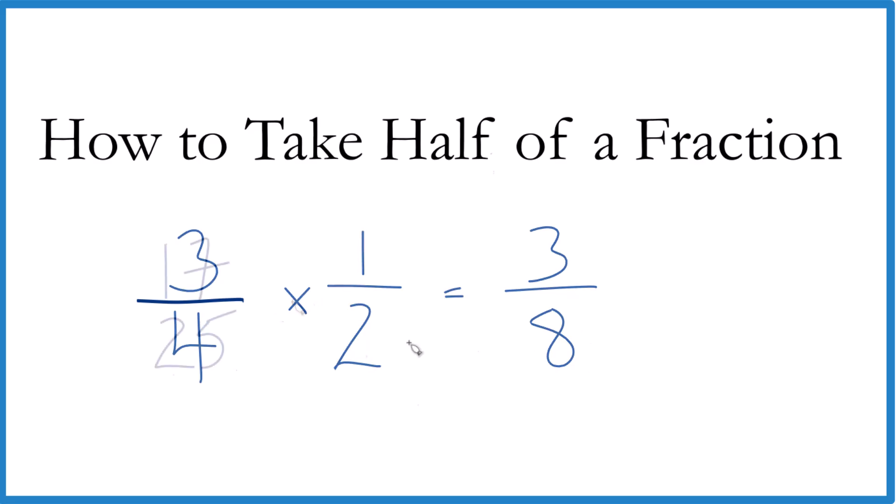Let's try kind of a crazy one. Pause and find half of the fraction 17-twenty-fifths. Let's give it a try. So 17 times one, that's 17, 25 times two, that's 50. And we can't reduce this any further. It's in simplest terms. Half of 17-twenty-fifths is 17-fiftieths.